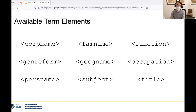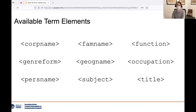In EAD, there are nine total types of controlled access terms that are allowed: corporate names, family names, functions, form and genre terms, geographic names, occupations, personal names, subjects, and proper titles. If you're familiar with other cataloging and descriptive standards, all of these are probably going to sound very familiar.